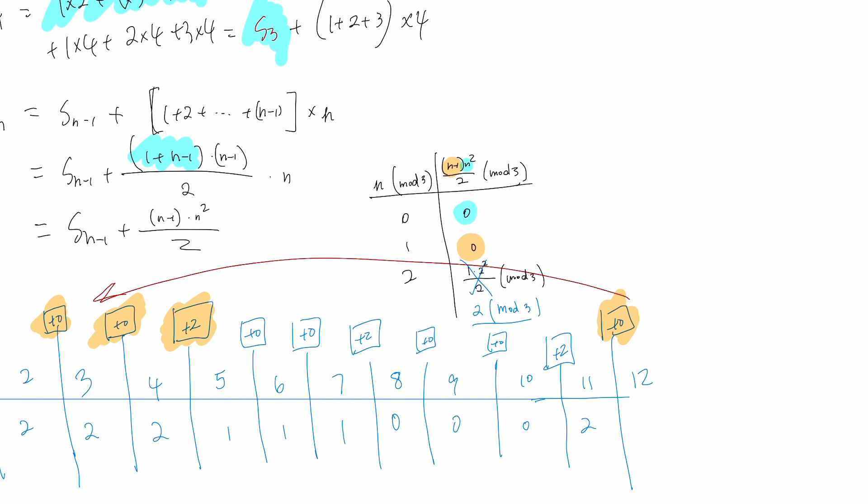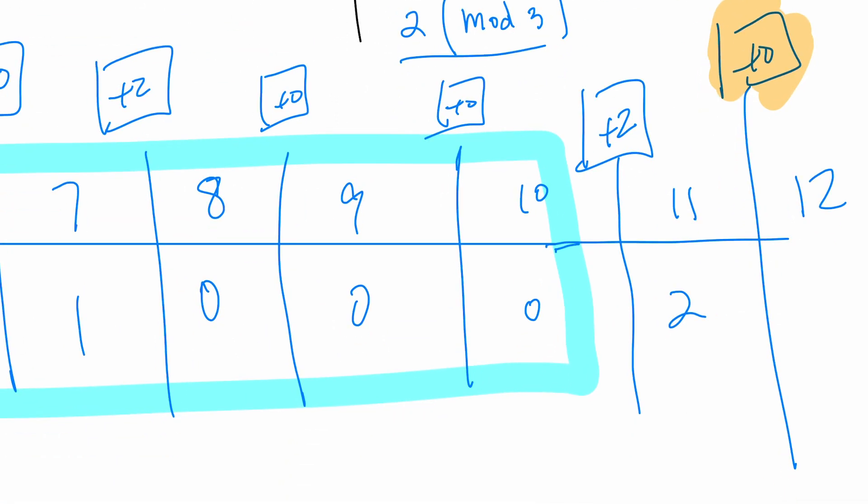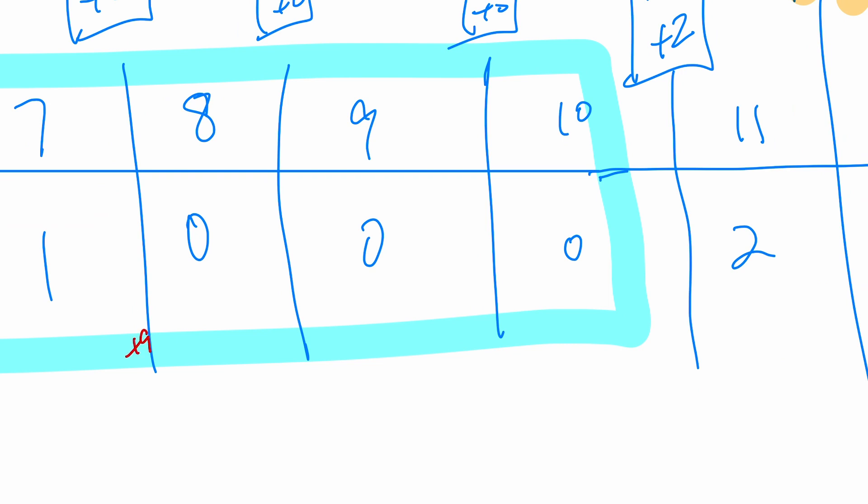This whole thing is going to be our cycle of 9 numbers. And these 3 numbers are what we're looking for: 8, 9, and 10. In the next cycle we just add 9, add 9, add 9, and get 17, 18, 19. If we do plus 9 again, because the cycle has length 9, we get 26, 27, 28.